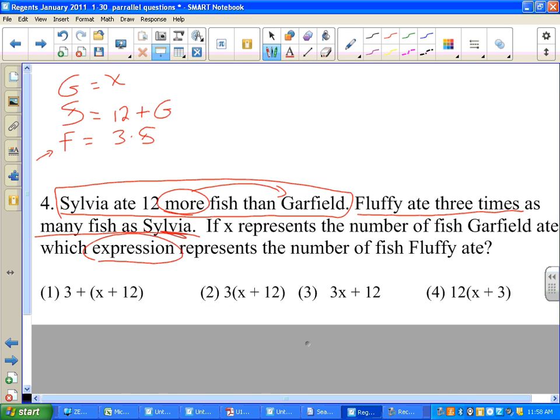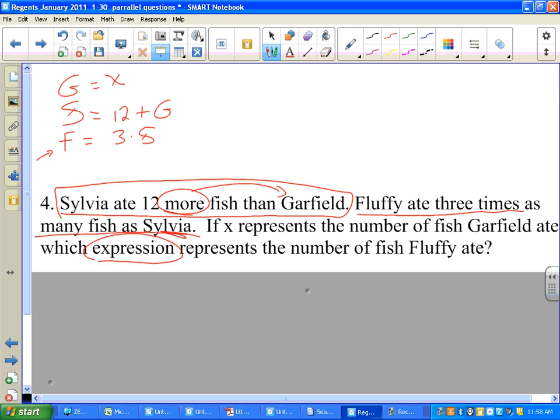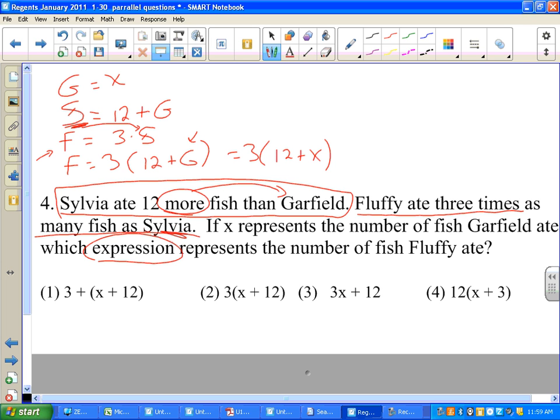Fluffy ate 3 times as many fish as Sylvia. So Fluffy is 3 times as many as Sylvia. It asks, which expression represents the number of fish that Fluffy ate? That's the expression. We look at our choices. It's not there. We cover it up. We notice that we need x in here. Instead of writing an s, everywhere we see an s, we can write the 12 plus g. So f equals 3, please remember to put it in parentheses, 12 plus g. But guess what? Instead of writing g, we're going to have to write x in a second. So it's 3 times 12 plus x. Let's see if that is here. It looks like this one. The only difference is that we commuted the 12 and the x. We can commute them because addition is commutative. We can change the order.